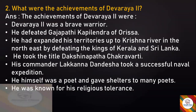Next question: What were the achievements of Devaraya II? Answer: Devaraya II was a brave warrior. He defeated Gajapati Kapilendra of Orissa. He expanded his territories up to the Krishna River in the northeast by defeating the kings of Kerala and Sri Lanka. He took the title Dakshinapatha Chakravarti. His commander Lakkana Dandesha led a successful naval expedition. He himself was a poet and gave shelter to many poets. He was known for his religious tolerance.